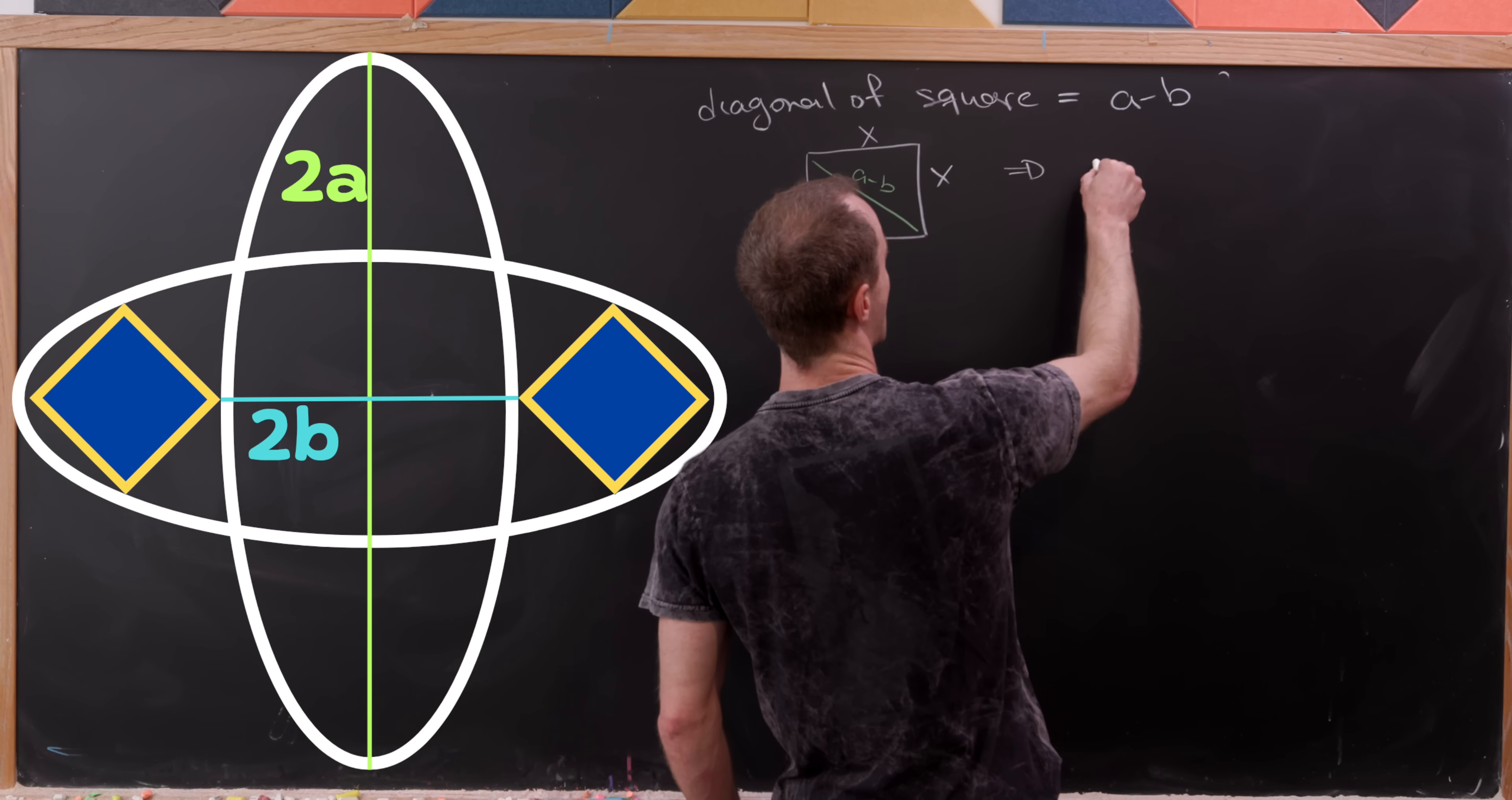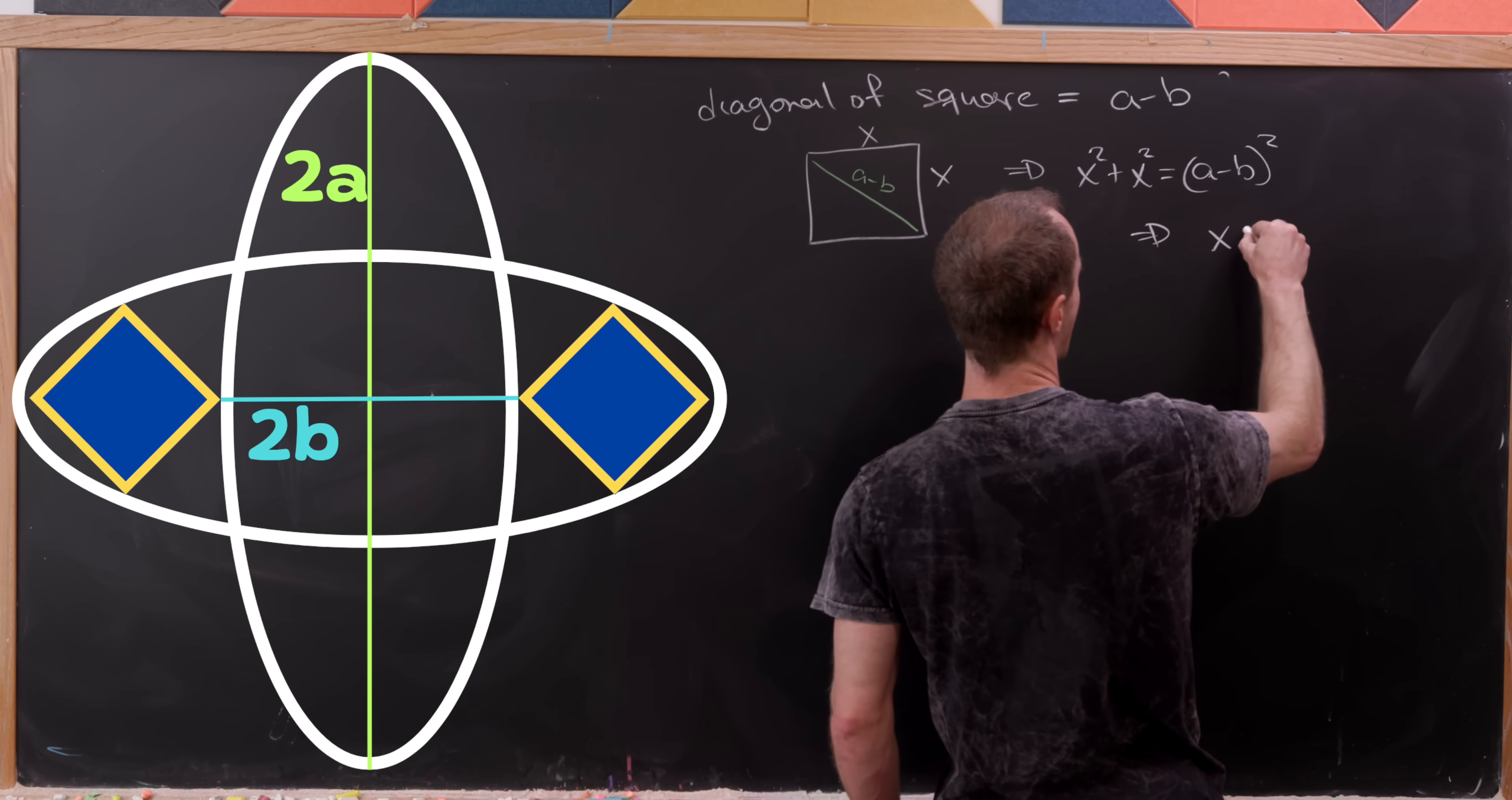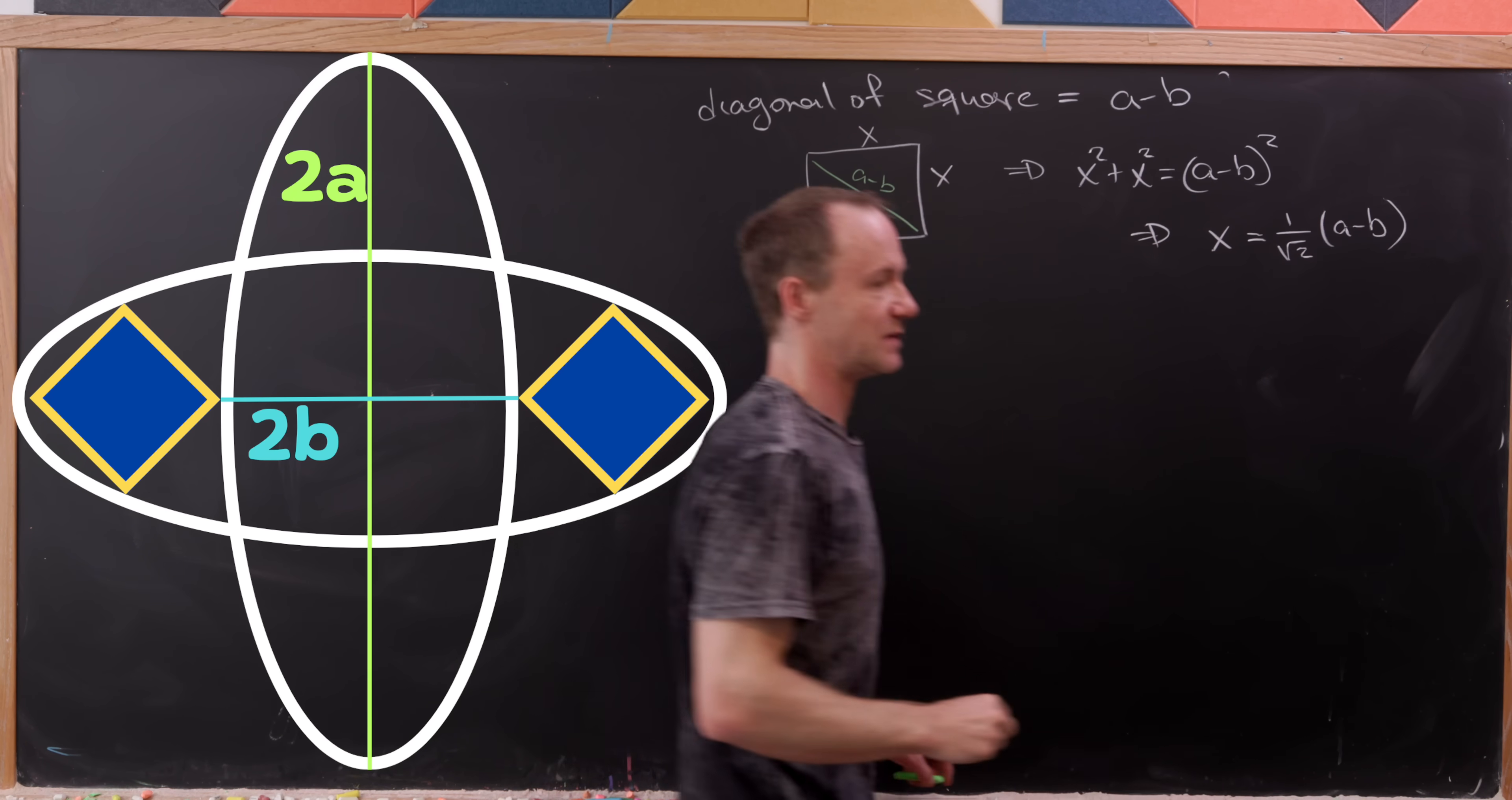Observe that we have X squared plus X squared equals (A minus B) squared. But here we see pretty quickly that X is going to equal 1 over the square root of 2 times (A minus B).